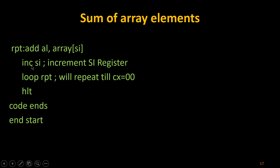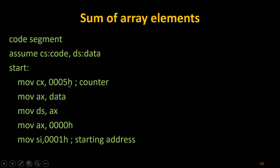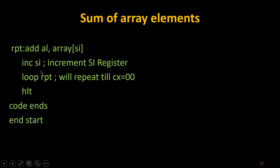After the addition, I increment the SI register using INC SI, so SI is updated and incremented. Then I repeat the loop until the final element is fetched from the data segment. Previously I set CX to 0005h, so the loop repeats, incrementing values one by one, and the LOOP command decrements CX each iteration.